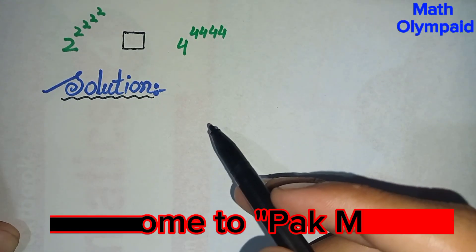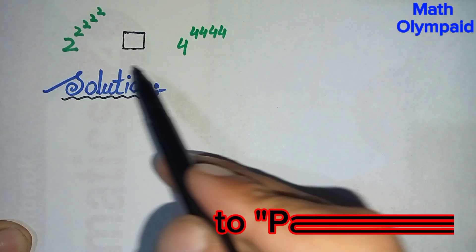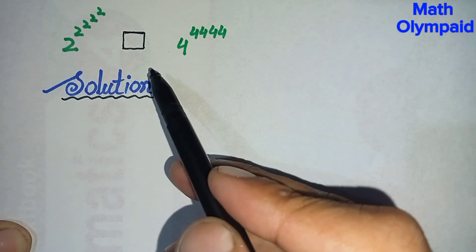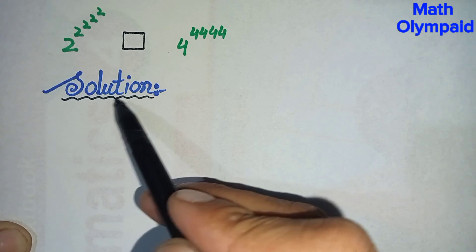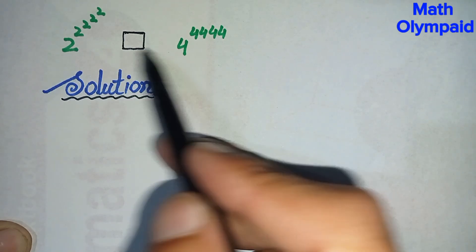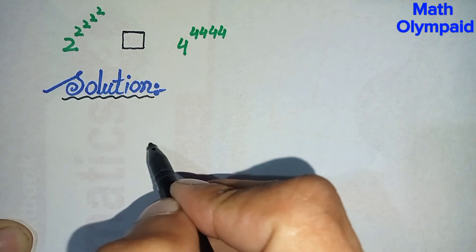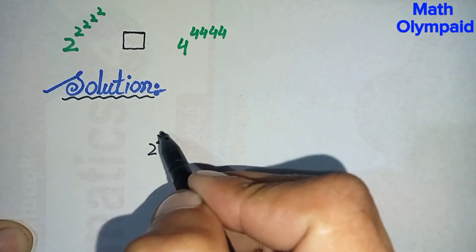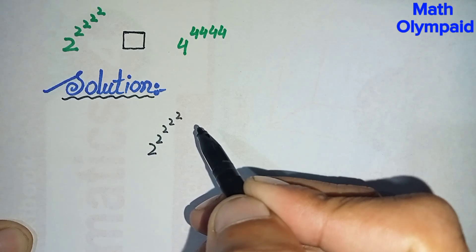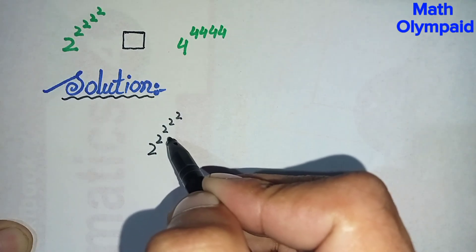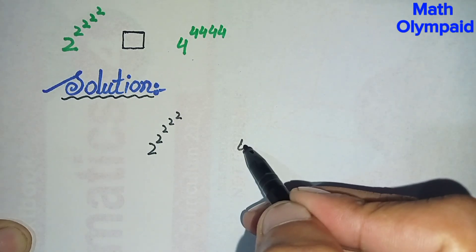Hi everyone, welcome back. In this video I'm going to solve which one number is greater and which one is smaller. To solve this question properly, first we will write the solution and rewrite the question: 2 raised to power 2 raised to power 2 raised to power 2 raised to power 2 — there are 4 twos in the power — and on the other side is 4 raised to power 4.